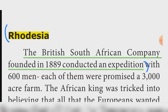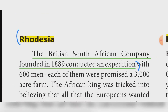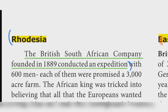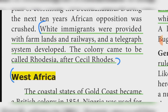Rhodesia: The British South Africa Company, founded in 1889, conducted an expedition. White immigrants were provided with farmlands and railways, and a telegraph system was developed. The colony came to be called Rhodesia after Cecil Rhodes.